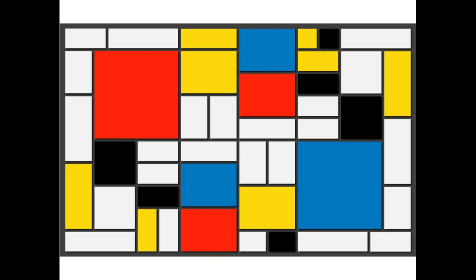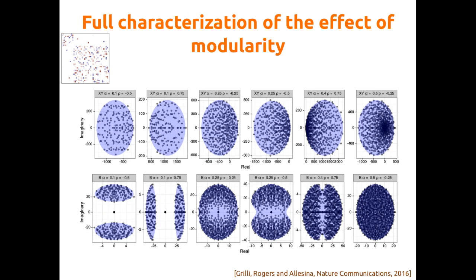This is somewhat related to the stochastic block model. The question is: what happens if you have this kind of structure? We considered random matrices where there were different groups of different sizes, characterized by different means, variances, and correlations of interaction strength. Depending on how you choose your parameters, you get a large effect on the spectrum — on the spectral density.